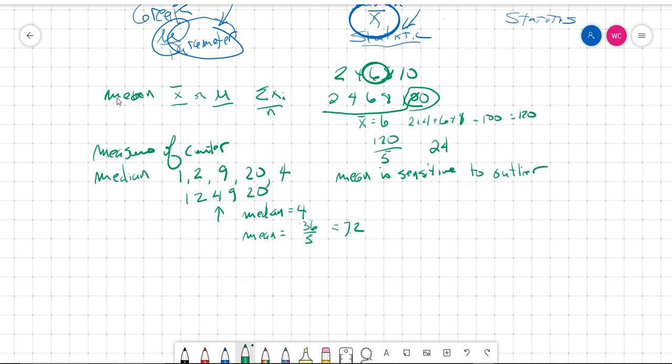Right? Whatever it is, it's not the same as 4, right? So the mean and the median are not the same thing. Now, 7.2, we could say, is the center of this set of numbers, or we could say that 4 is the center. So the word center is not exactly well-defined or clearly defined. We could say that it's 4. We could say that it's 7.2.